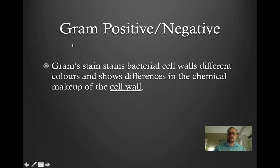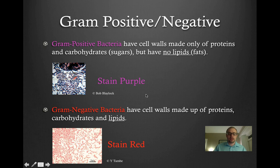What exactly does that mean? Well, gram-stain is a type of chemical stain that we can mix in with bacteria, and it will stain the bacteria's cell walls different colors and show differences in the chemical makeup of the cell wall. So we're dealing with a cell wall here. Once we add gram-stain to a colony of bacteria, gram-positive bacteria will stain purple, as you can see with these bacteria in this diagram.